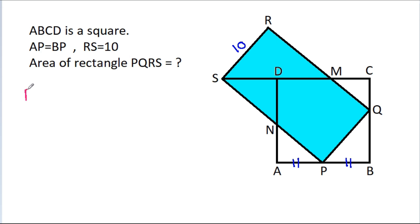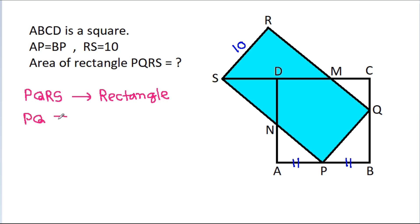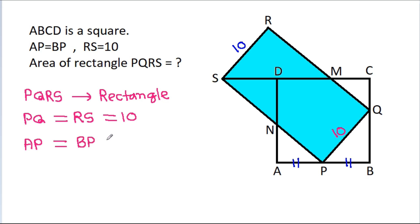PQRS is a rectangle, that means PQ will be equal to RS, that is 10. So PQ is 10, and also we have AP is equal to BP. Suppose AP is A and BP is A, and ABCD is a square.